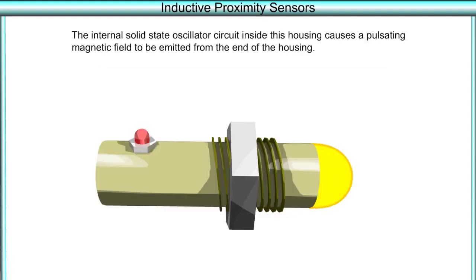The internal solid-state oscillator circuit inside this housing causes a pulsating magnetic field to be emitted from the end of the housing.